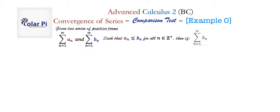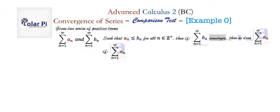Let's write down what I just said: if the infinite series with b sub n converges, then so does the infinite series with a sub n. And for divergence, it's the other way around — that is, if the infinite series with a sub n diverges, then so does the infinite series with b sub n. So this concludes the statement.